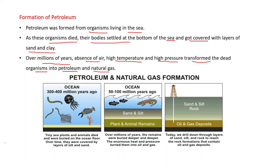With the help of this diagram you can understand: tiny sea plants and animals died and were buried on the ocean floor. Over time they were covered by layers of silt and sand, and over millions of years the remains were buried deeper and deeper. The enormous heat and pressure turned them into oil and gas. Today we drill down through layers of sand, silt, and rock to reach rock formations that contain oil and gas deposits.